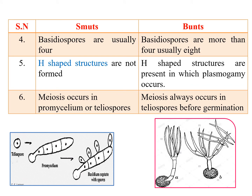The next important character is H-shaped structures. These are not formed in the case of smut fungi, whereas in bunt fungi H-shaped structures are present, in which plasmogamy occurs. After teliospore germination in bunt fungi, the promycelium gives rise to H-shaped structures. In smut fungi there are no H-shaped structures and the promycelium is septate, whereas in bunt fungi the hollow tube-like promycelium gives rise to basidiospores among which these H-shaped structures are present.